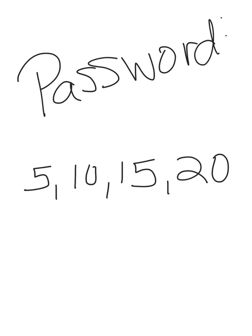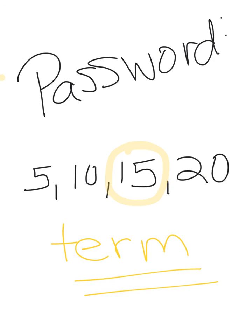Now I'm going to give you your password that you need to record in your planner and bring with you to class tomorrow to demonstrate completion of your homework. In chapter 3, we learned that numbers in an ordered list are called a sequence. What is the number within the sequence called? A number within a sequence is called a term. Be sure to record this word in your planner and bring it with you to class tomorrow.